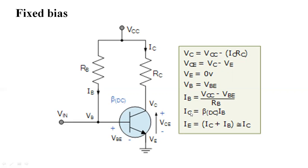Now, the value of IC: the formula is IC equals beta times IB. And IE equals IC plus IB. If beta is very large, then IE is approximately equal to IC. This completes the fixed bias calculation.